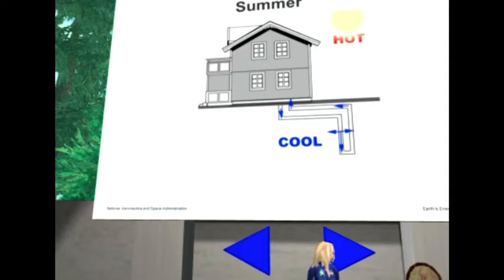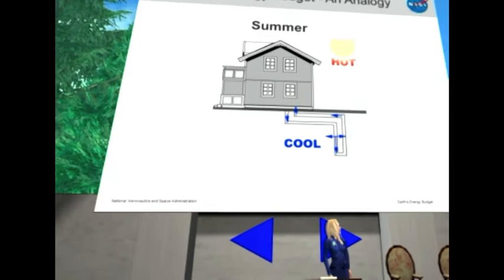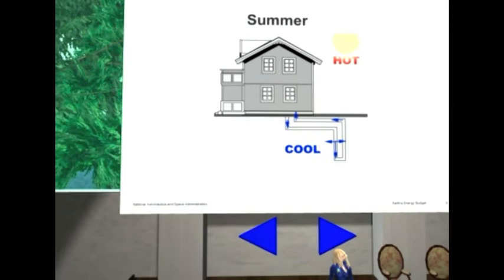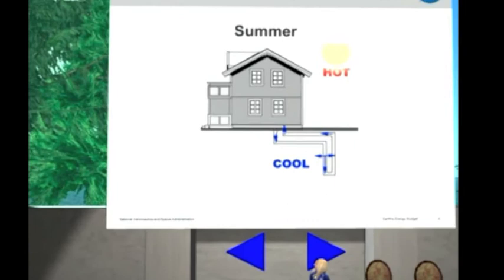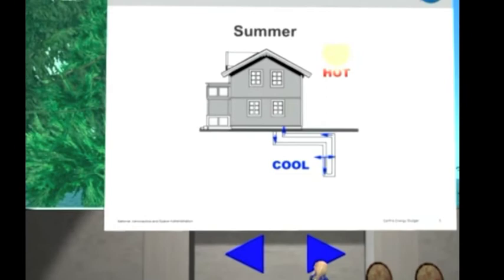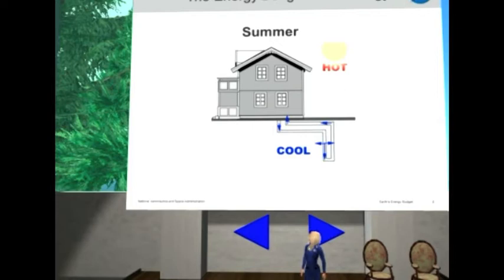Now, to give you an analogy for this, and since you guys are in Florida, or at least I believe you're mostly in Florida, I went with the summer analogy. So here's a house, and it's summertime, and so it's hot outside. And so in order to maintain a comfortable temperature within the house, you have some sort of a cooling system, typically an air conditioning system.